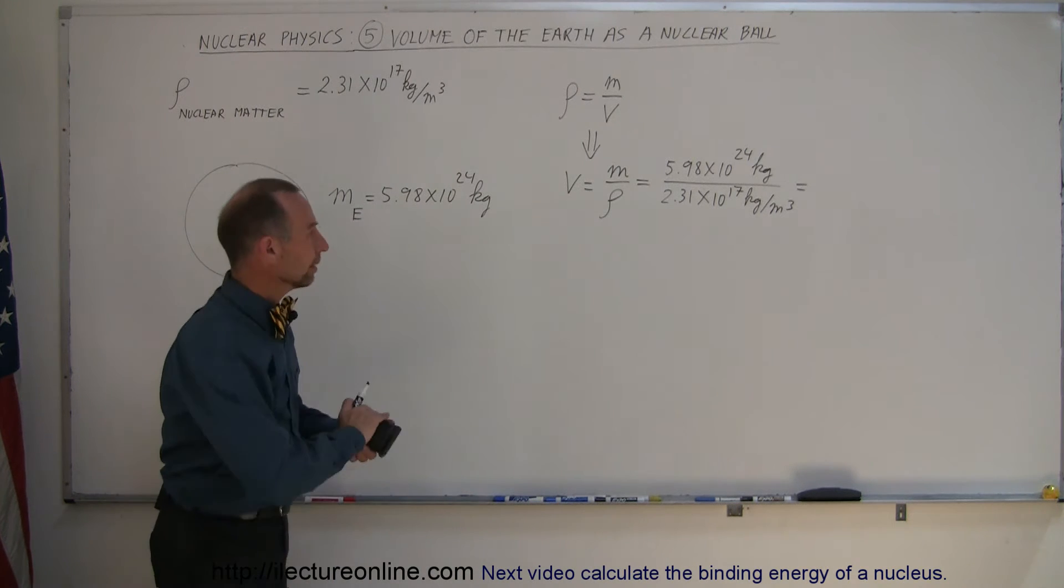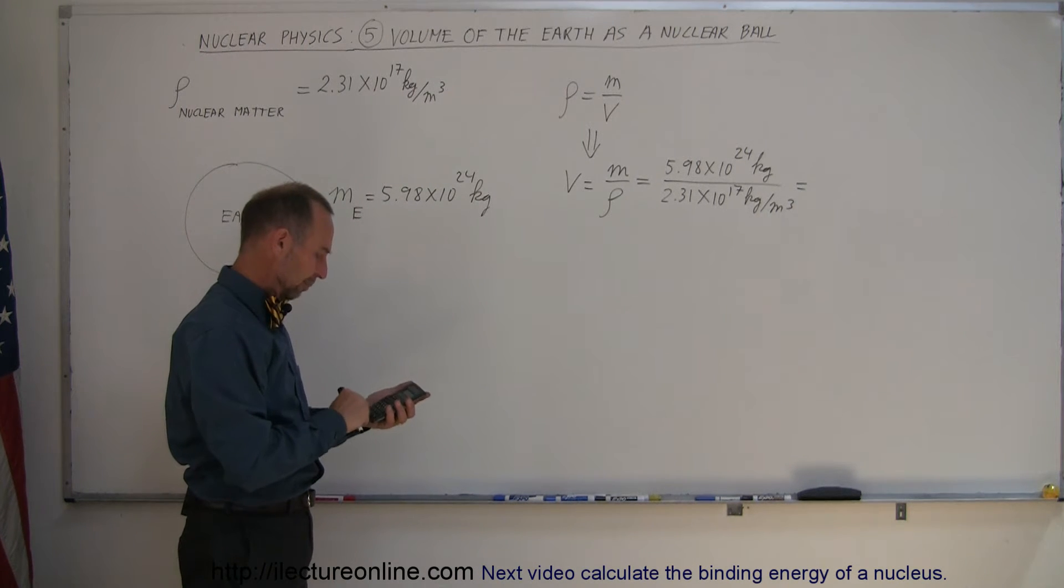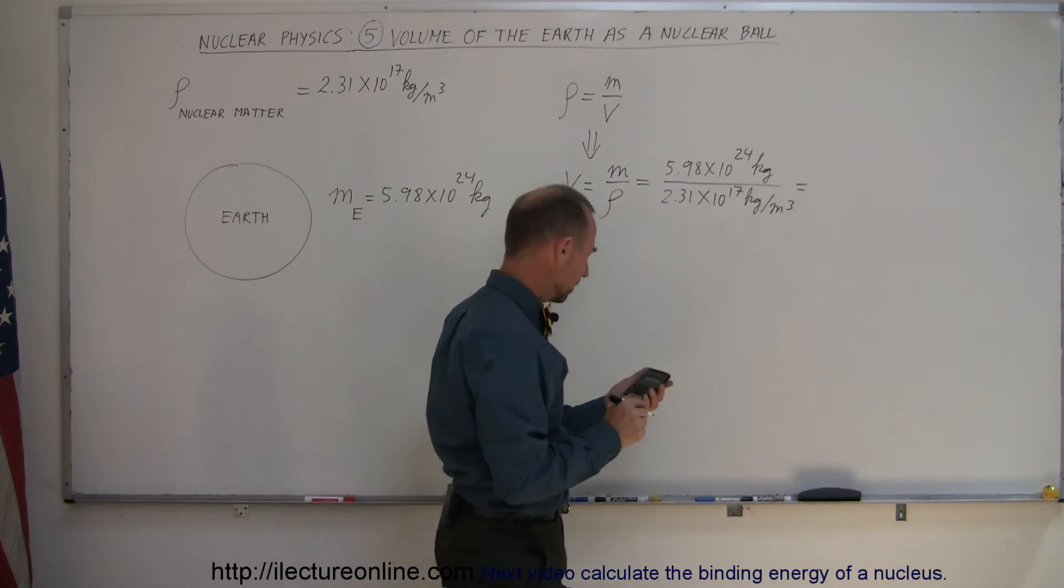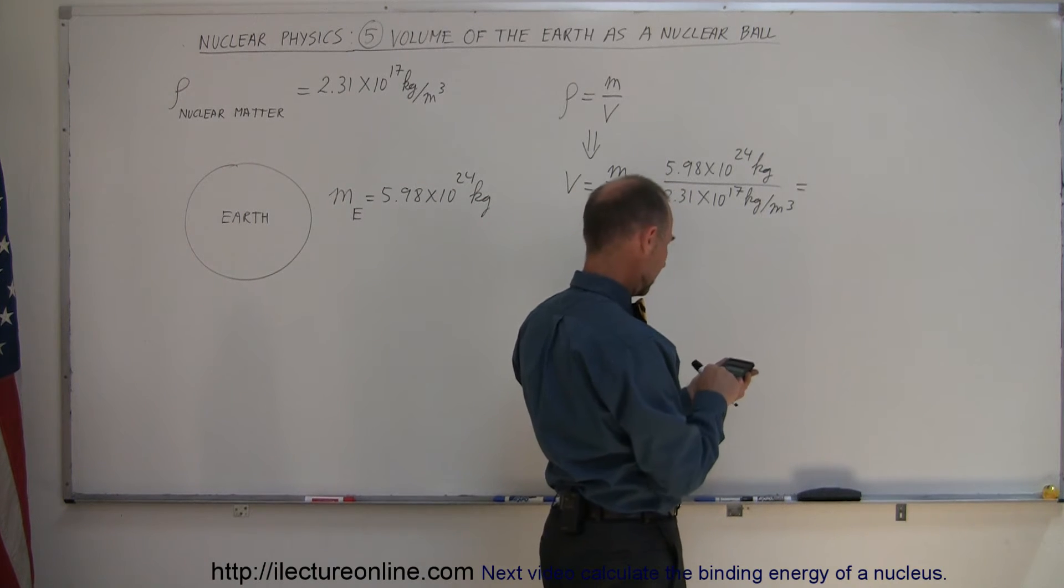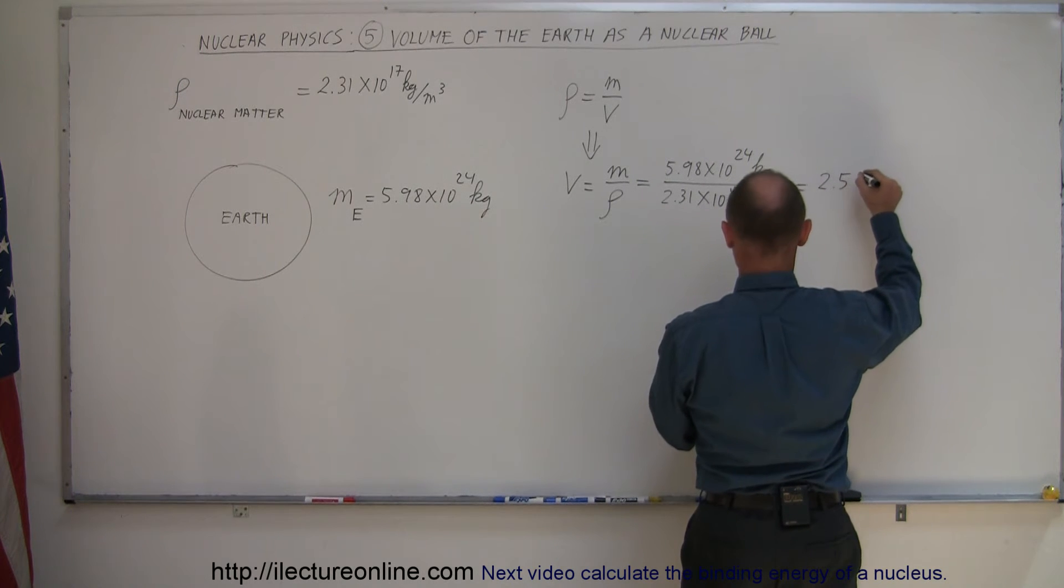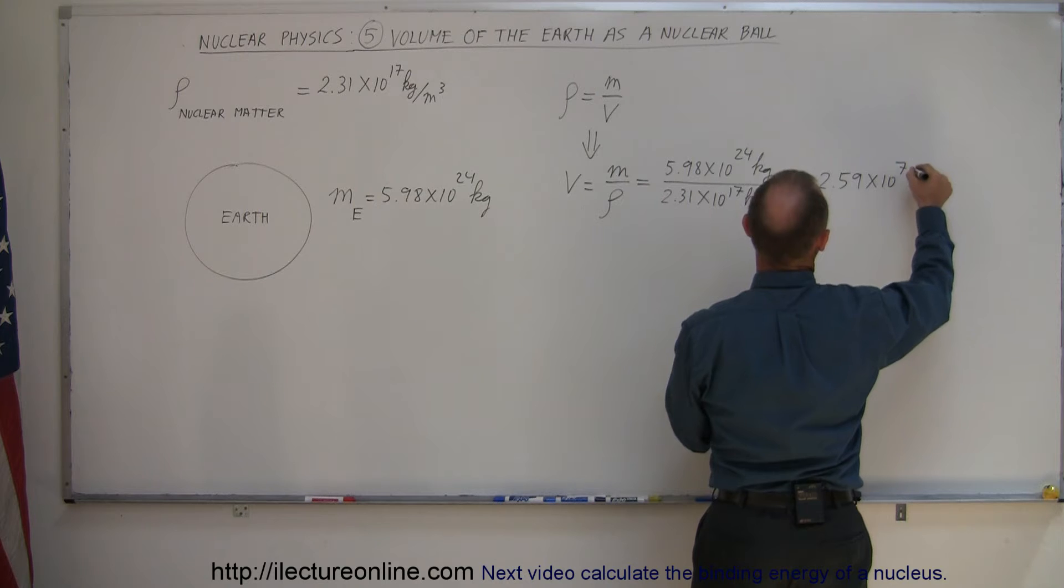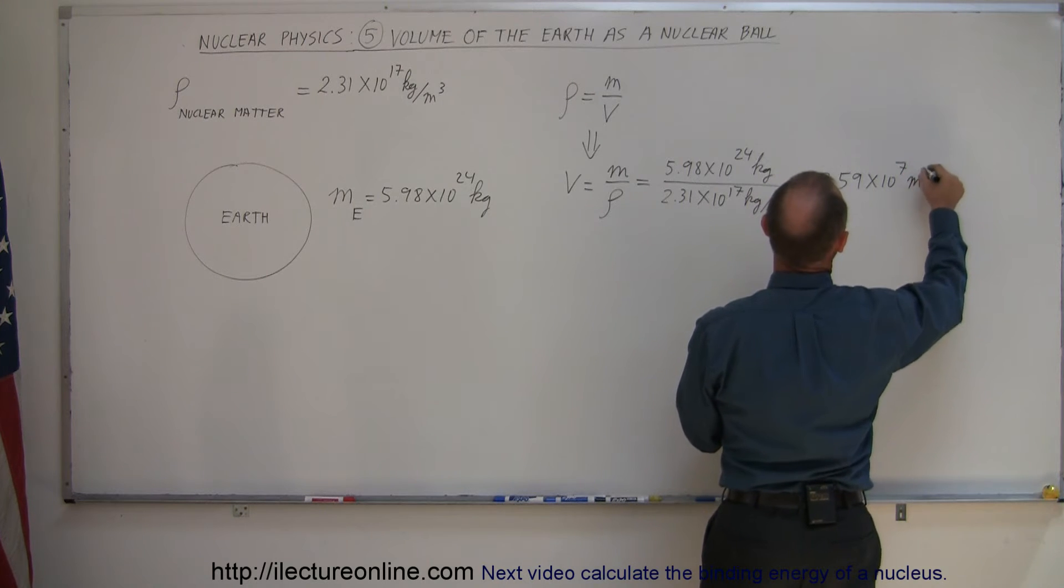For that, we need a calculator. So 5.98 e to the 24th divided by 2.31 e to the 17th. And the volume would be 2.59 times 10 to the 7th cubic meters.